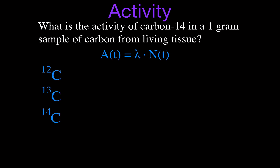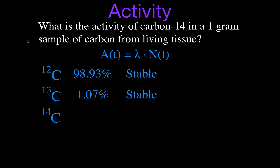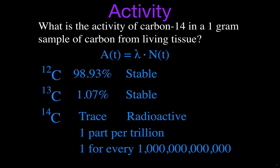Let's review quickly. There are three isotopes of carbon: carbon-12, carbon-13, and carbon-14. Carbon-12 and carbon-13 are stable — they are not radioactive. Carbon-12 is 98.93% of all carbon; carbon-13 is 1.07%. Even though these add up to 100%, there is still a very small amount of carbon-14 — the radioactive isotope used for radiocarbon dating. It occurs in trace amounts: one part per trillion, meaning one atom of carbon-14 in every trillion atoms of carbon.